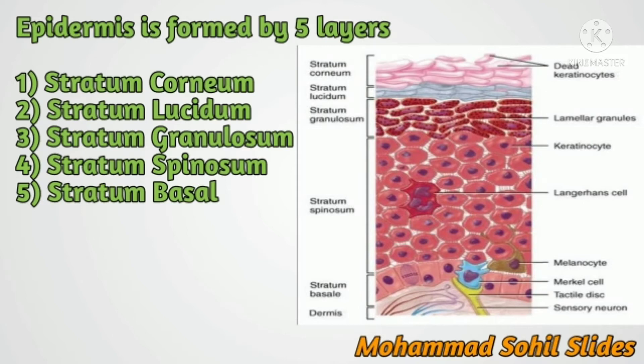The five layers of the epidermis are: first, stratum corneum; second, stratum lucidum; third, stratum granulosum; fourth, stratum spinosum; and fifth, stratum basale. Let's see them one by one.